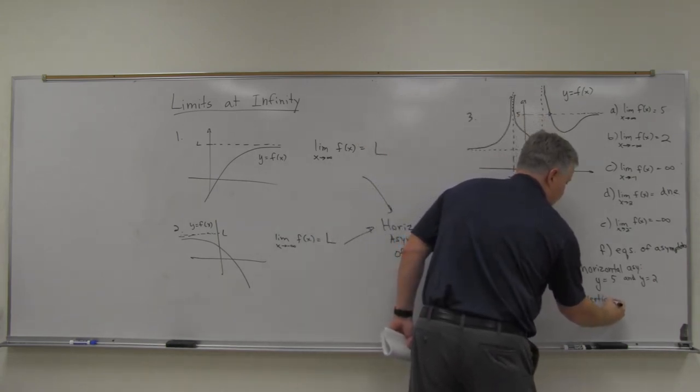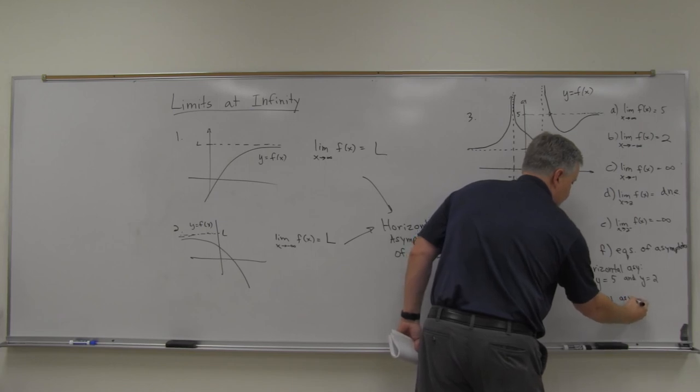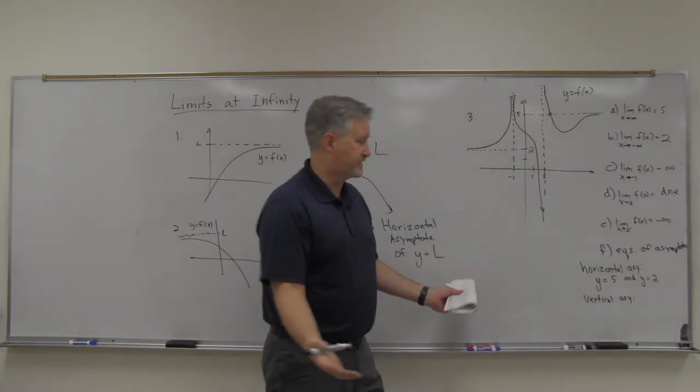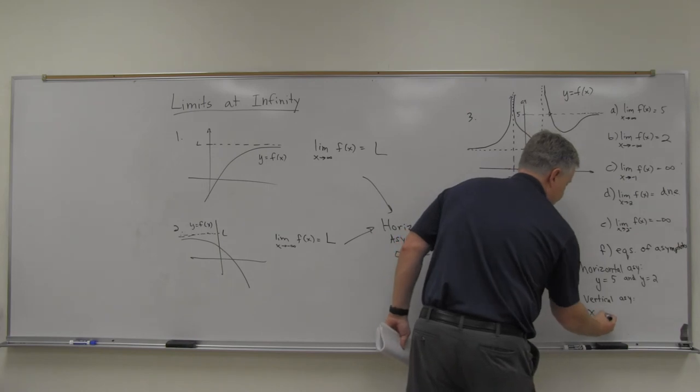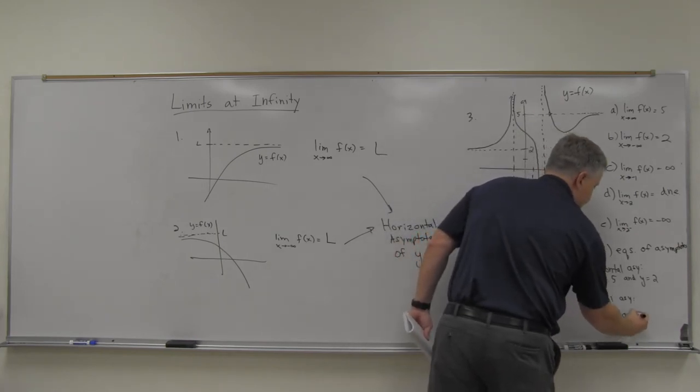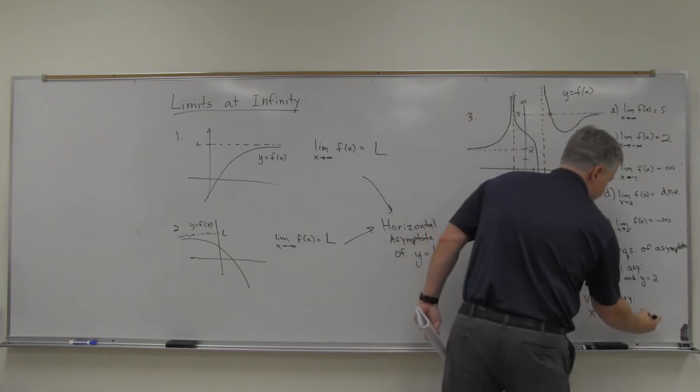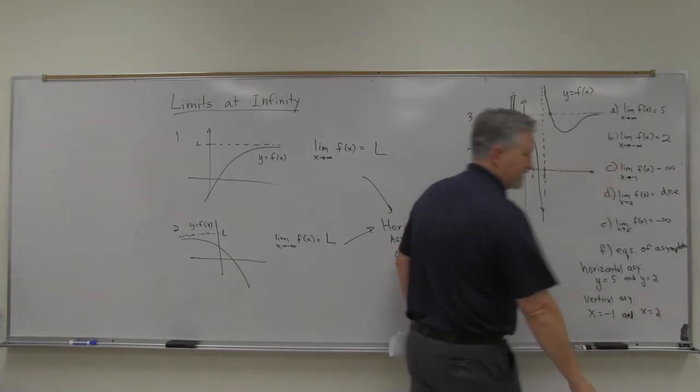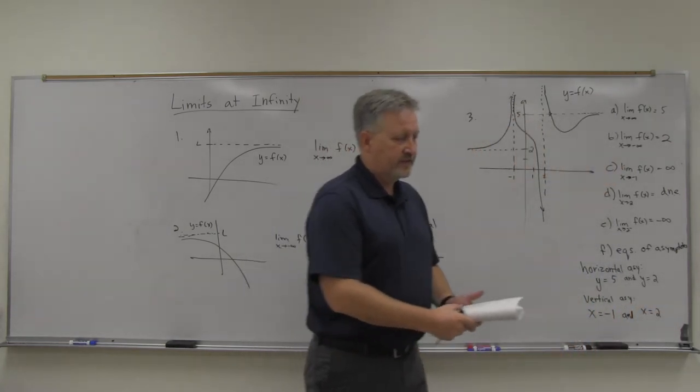And remember, those are vertical lines, and so they would be, the form of them would be x equals a number. So it'd be x equals negative one and x equals two. I think we talked about it as well as those previously as well.